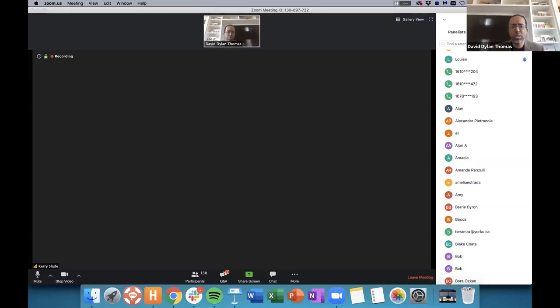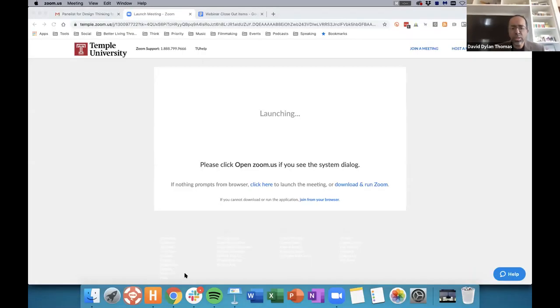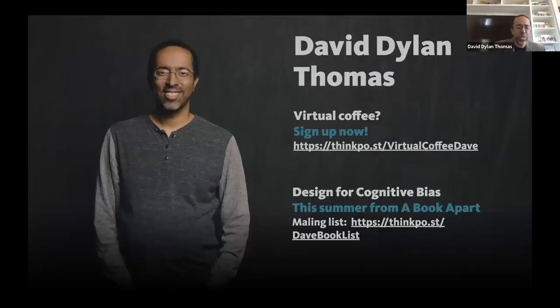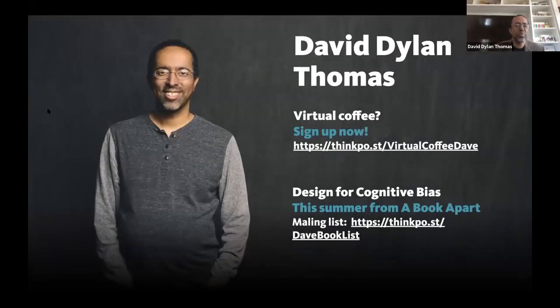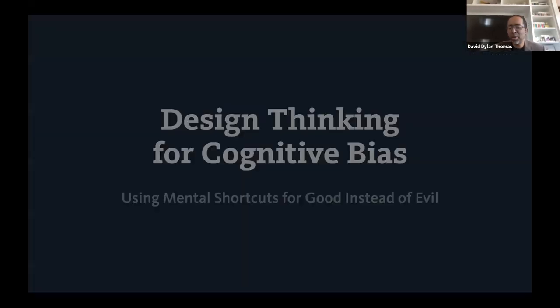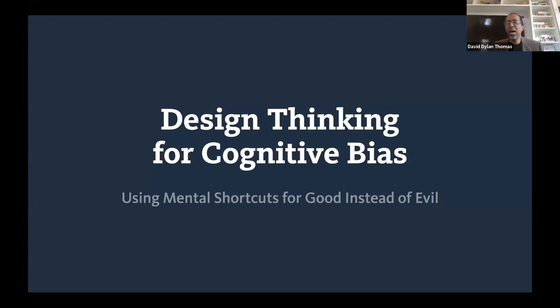Thanks so much, and thanks for the kind words. It's been great working with you too. Hello everybody — I'm going to grab the screen here. Oops, that's the very end — spoiler alert, you just saw the last slide. Here we go, that's better. So today we're going to talk about design thinking for cognitive bias: using mental shortcuts for good instead of evil. If you want to tweet, the hashtag for this is #fightbias.